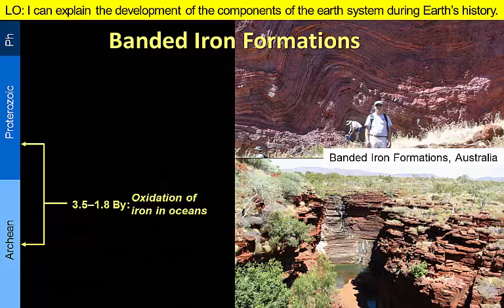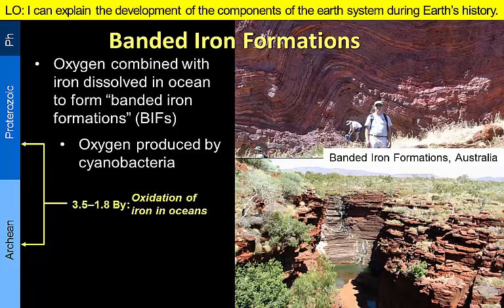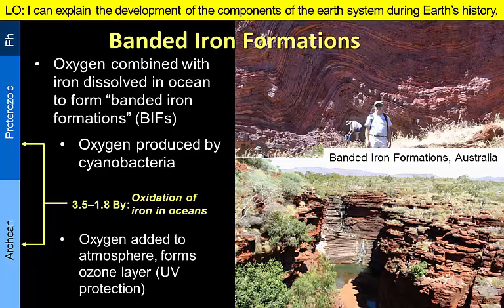Banded iron formations, or BIFs, are the most common sedimentary rocks formed during the Archean. These are chemical sedimentary rocks formed when oxygen reacted with dissolved iron in the early oceans. This process continued until all the dissolved iron was oxidized, which took more than a billion years. It was only then, when the dissolved iron was used up, that oxygen became available to be added to the atmosphere. Gradually over time, the carbon dioxide concentration in the atmosphere was reduced and the oxygen and nitrogen levels increased.